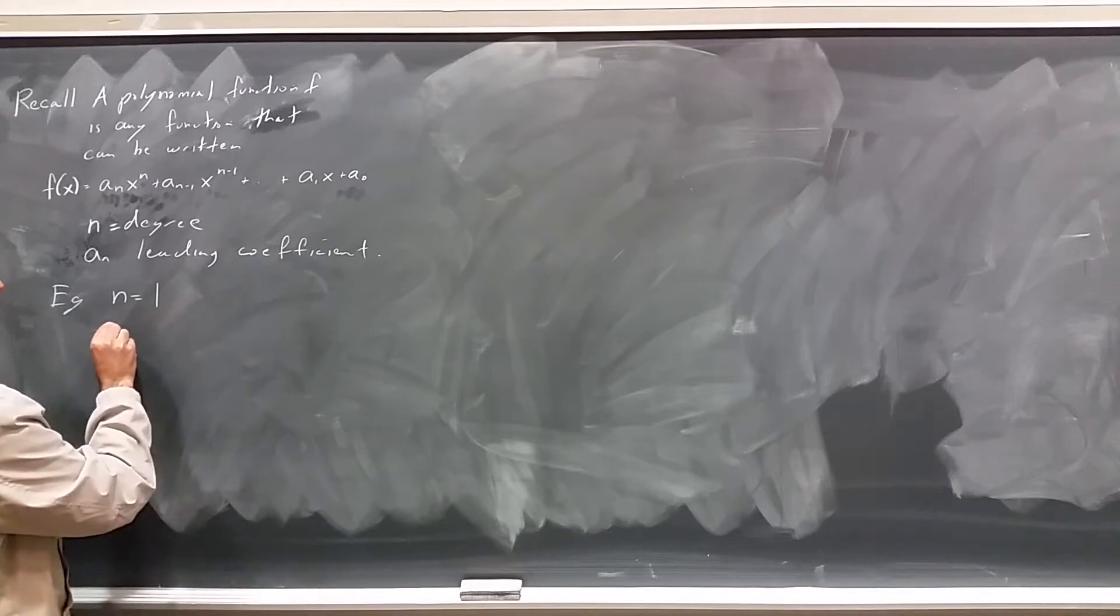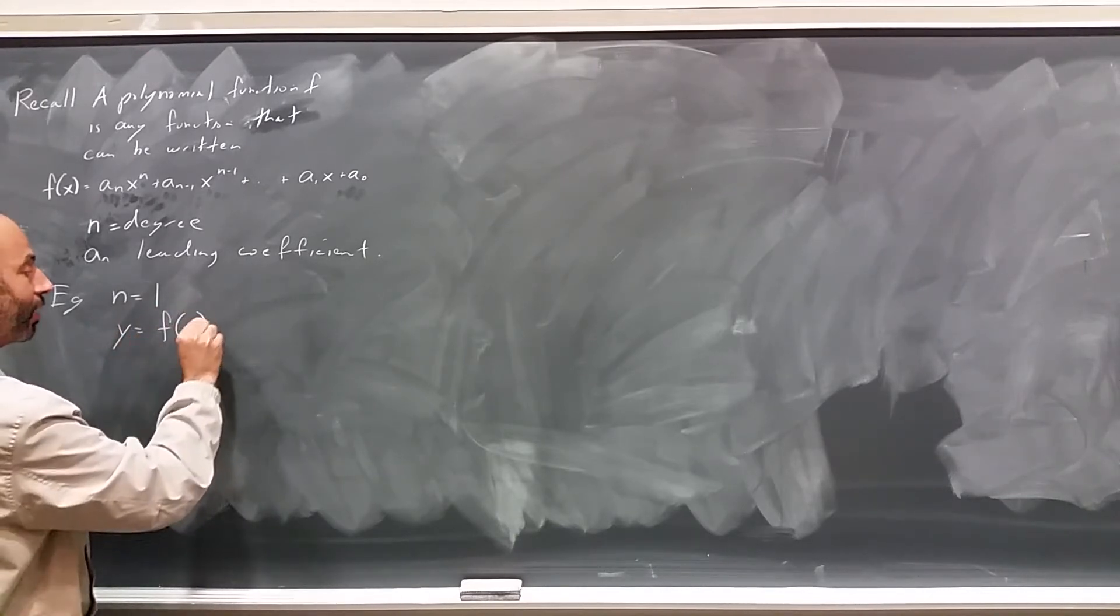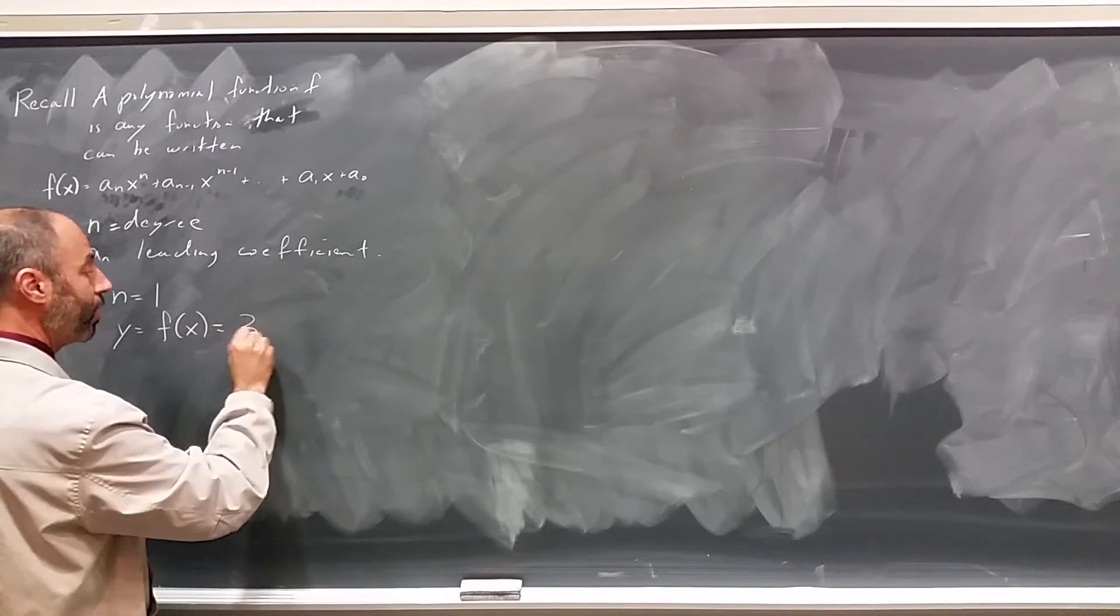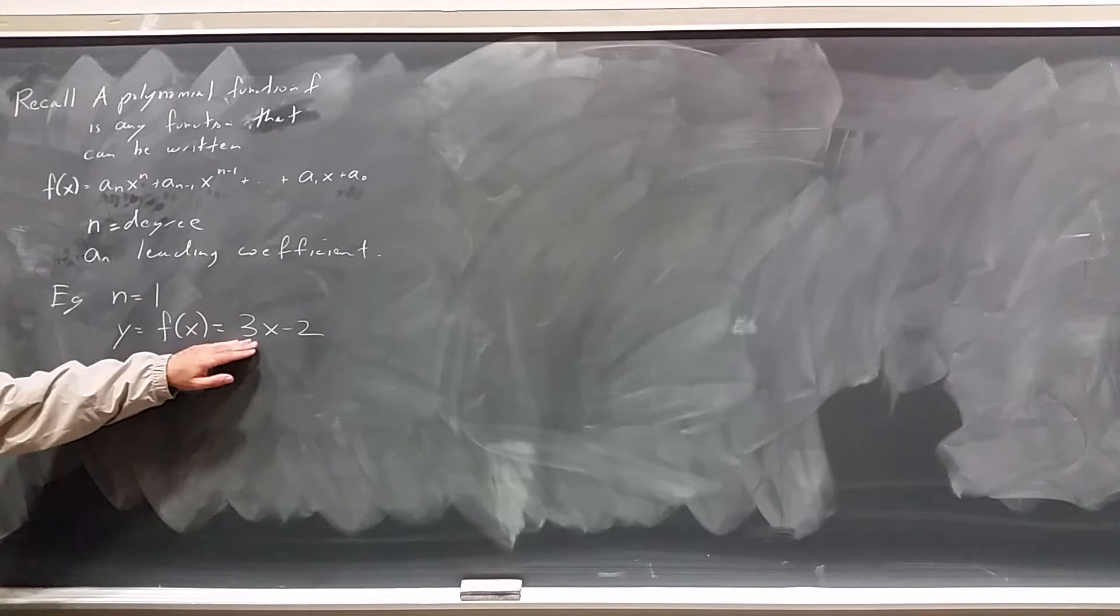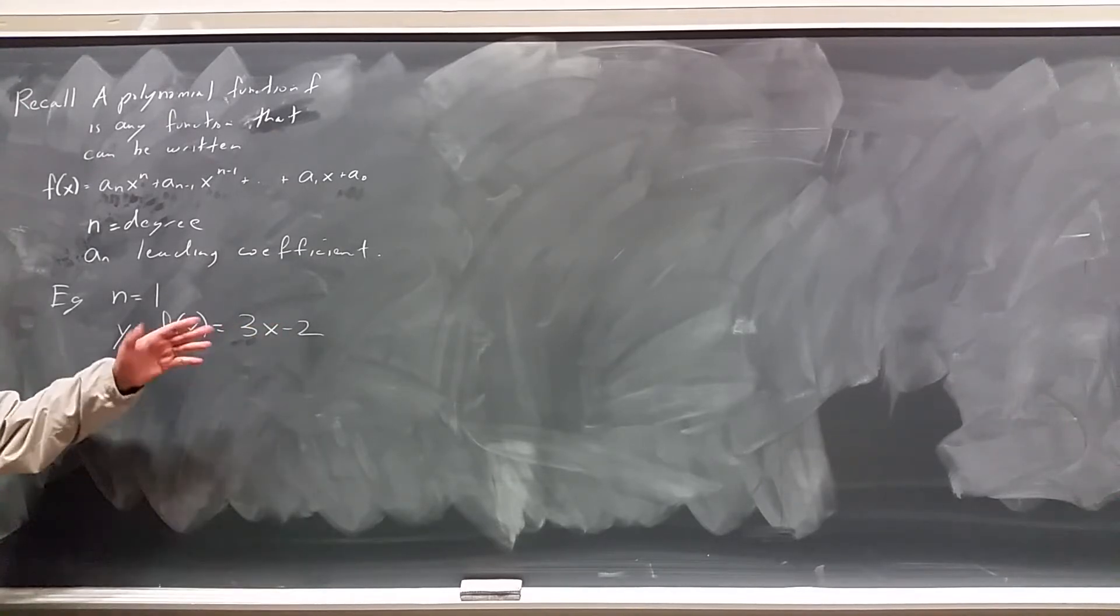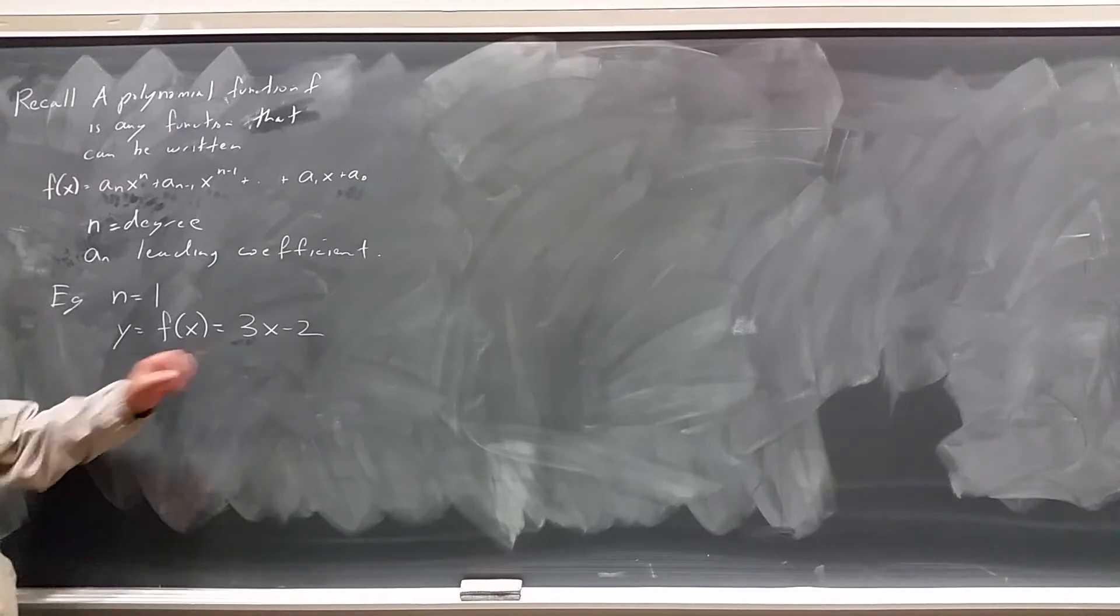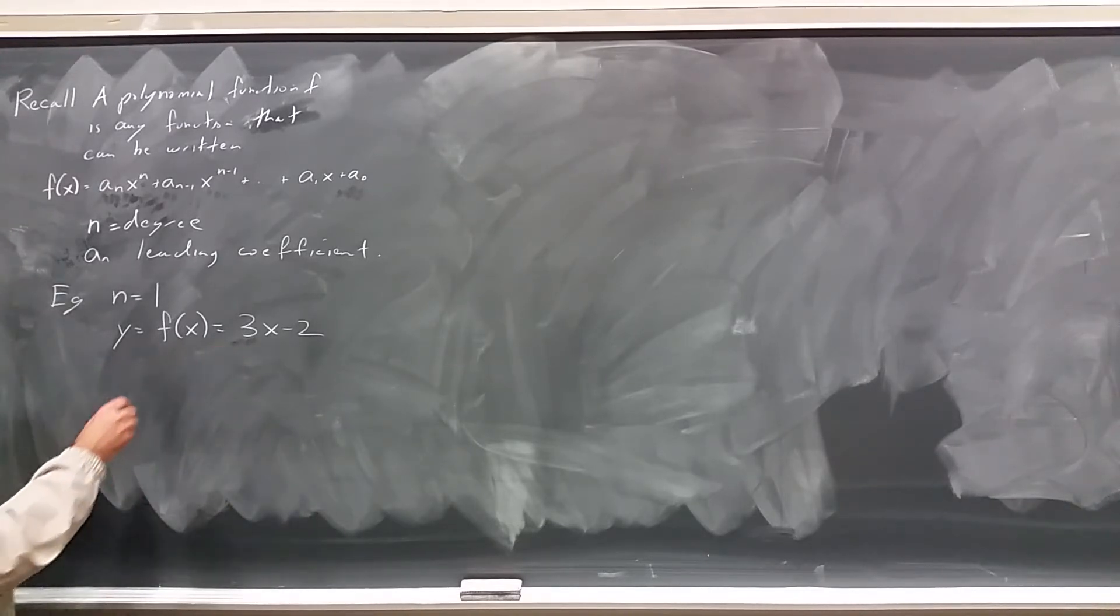Let's take a look at an example where n equals 1. Take a look at the example y equals f(x) equals 3x minus 2. We know that a first-degree polynomial, which this is, the largest power of x is x to the 1, is called linear, and its graph is a straight line.